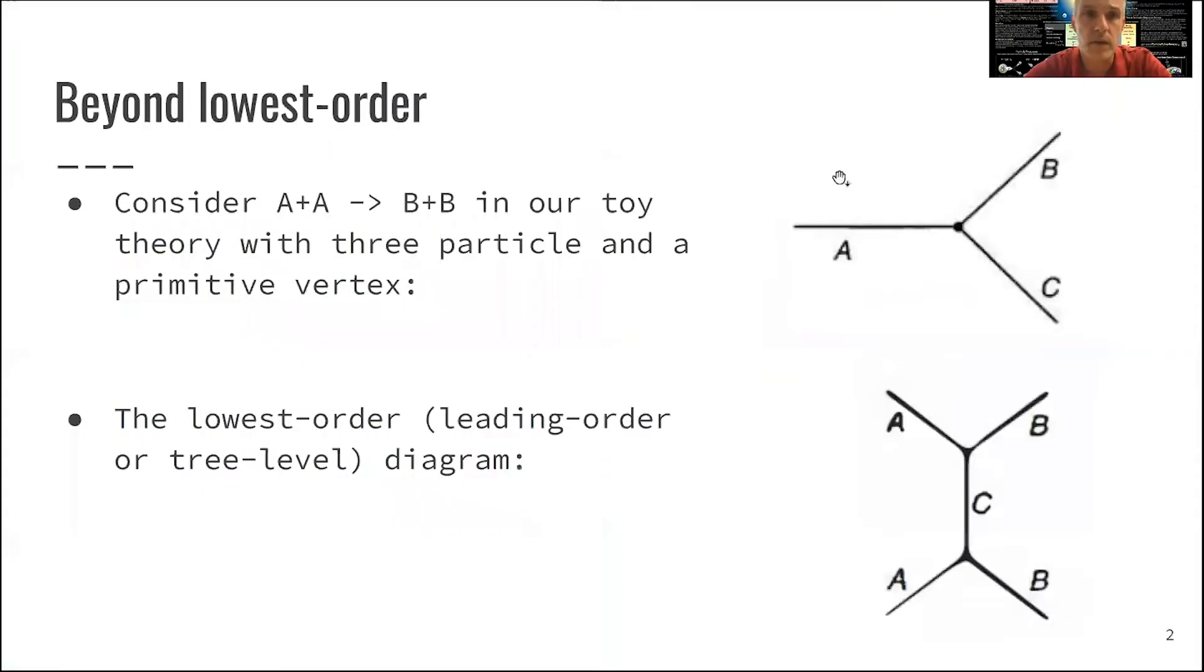So we started off with our toy theory, where we have a primitive vertex where three particles undergo an interaction. The strength of the interaction, or the coupling, has just labeled this as g.